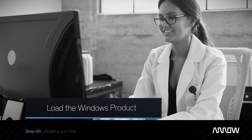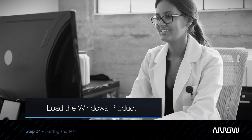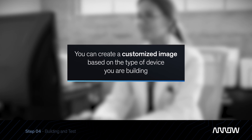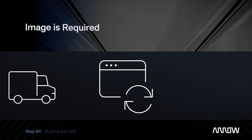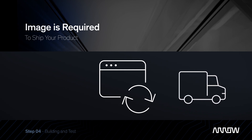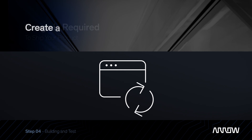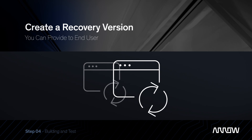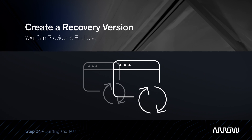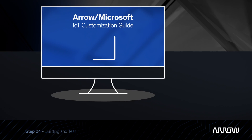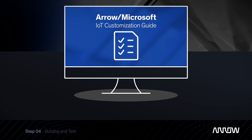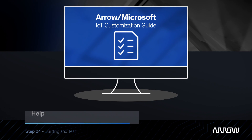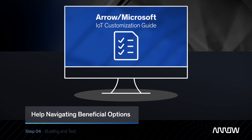Load a test unit with the Windows product. Using the software obtained in Step 2, you will be able to create a customized image based on the type of device you are building. This image is required to ship your product. Test the image and even create a recovery version that you can provide to your end user, if preferred. Request the Aero Microsoft IoT customization guide to help navigate the many beneficial options.